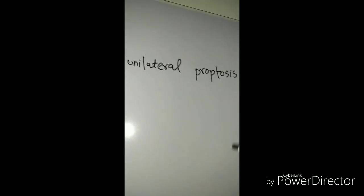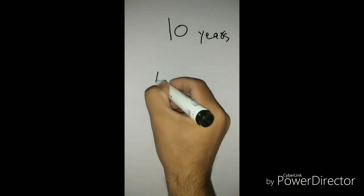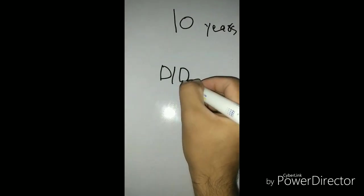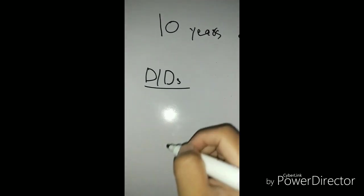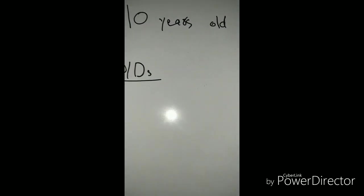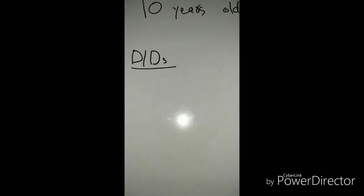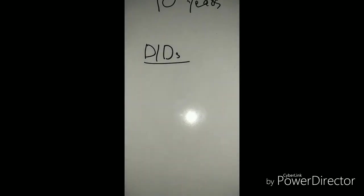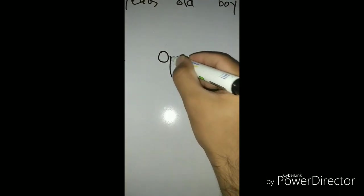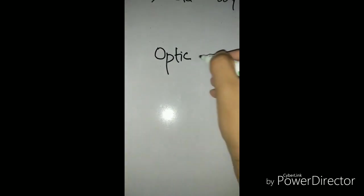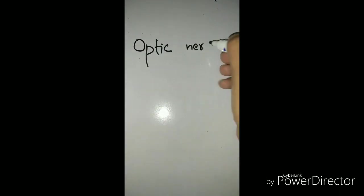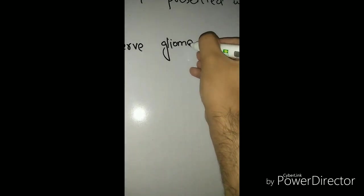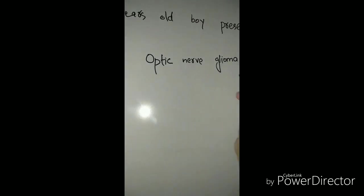Our orbit is a closed pear-shaped cavity and there is a limited space for everything. So when some mass accumulates behind the globe or above or below the globe, that space is filled and then the eye has to move forward, it has to bulge, it has to proptose to accommodate that mass. So that is called proptosis.